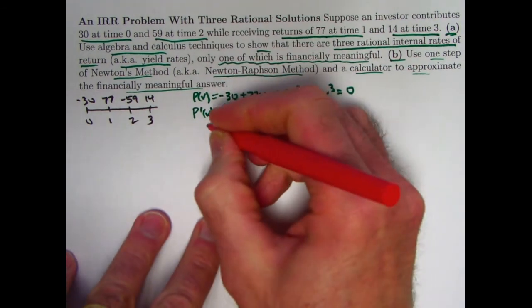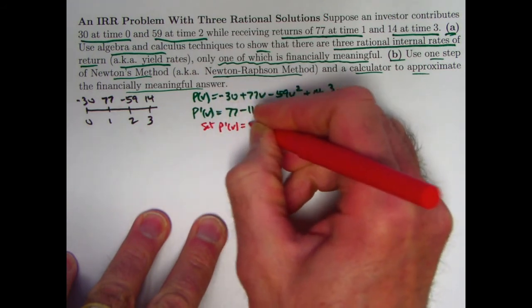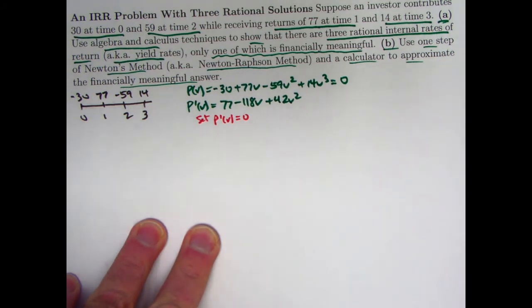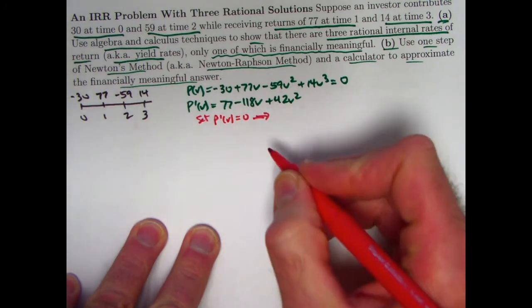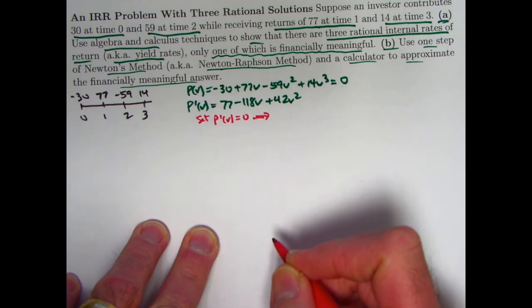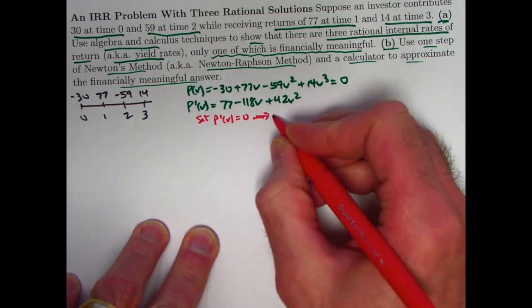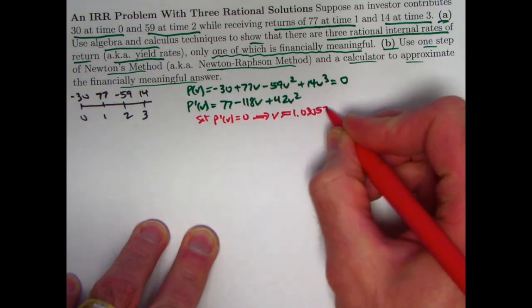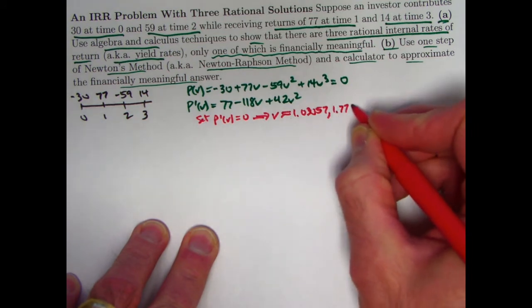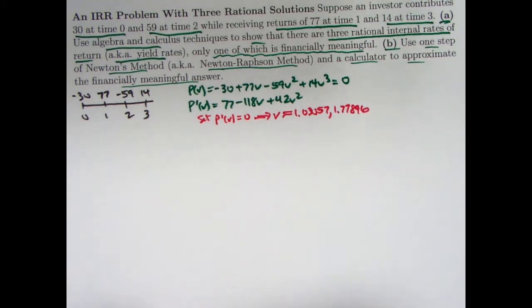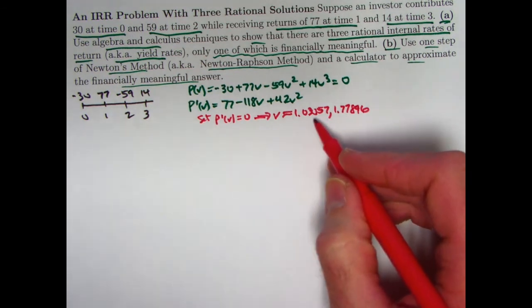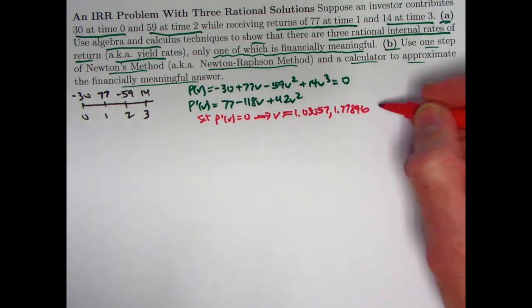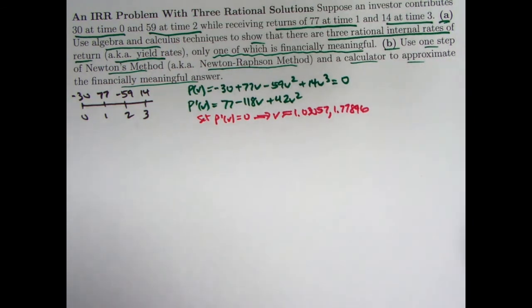Let's pretend we don't have a graphing calculator. We only have a financial calculator so we can't graph it. So we need some calculus to help us graph this. The first derivative and second derivative could be helpful. The first derivative is going to be 77 minus 118v plus 42v squared. If you set that first derivative equal to zero and solve for v, that will give you the critical points, which could be local maxes or mins. This is something you should check on your own. If you do this, you should get two irrational numbers using the quadratic formula.